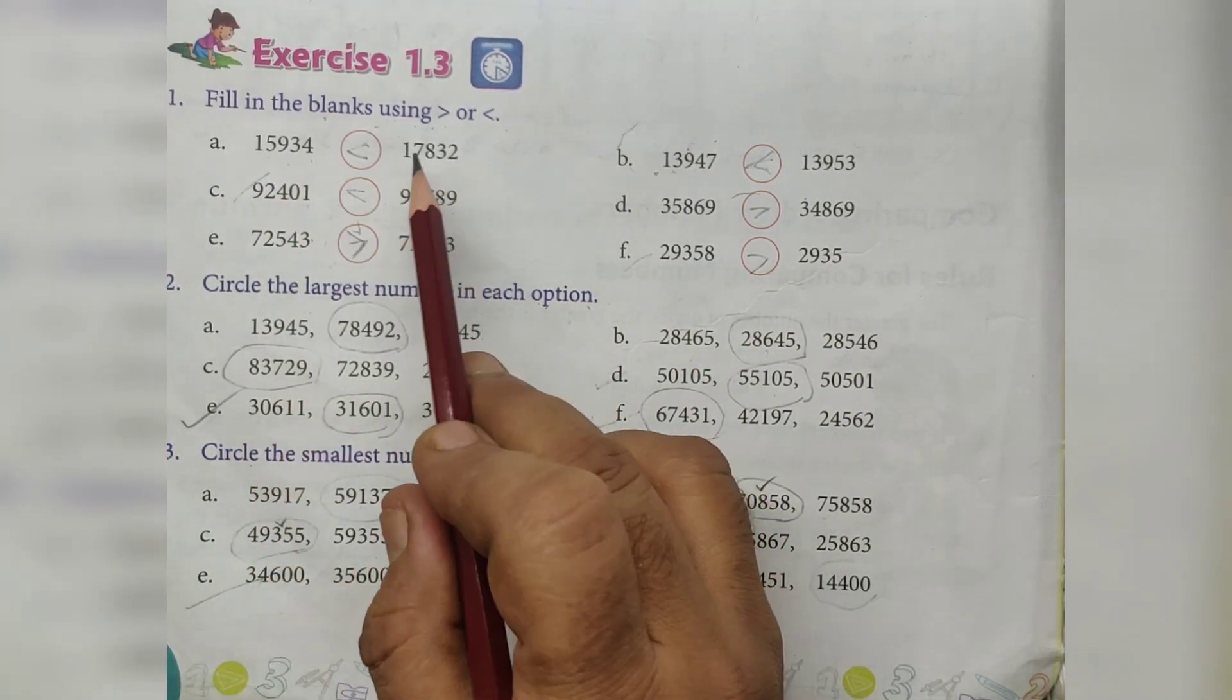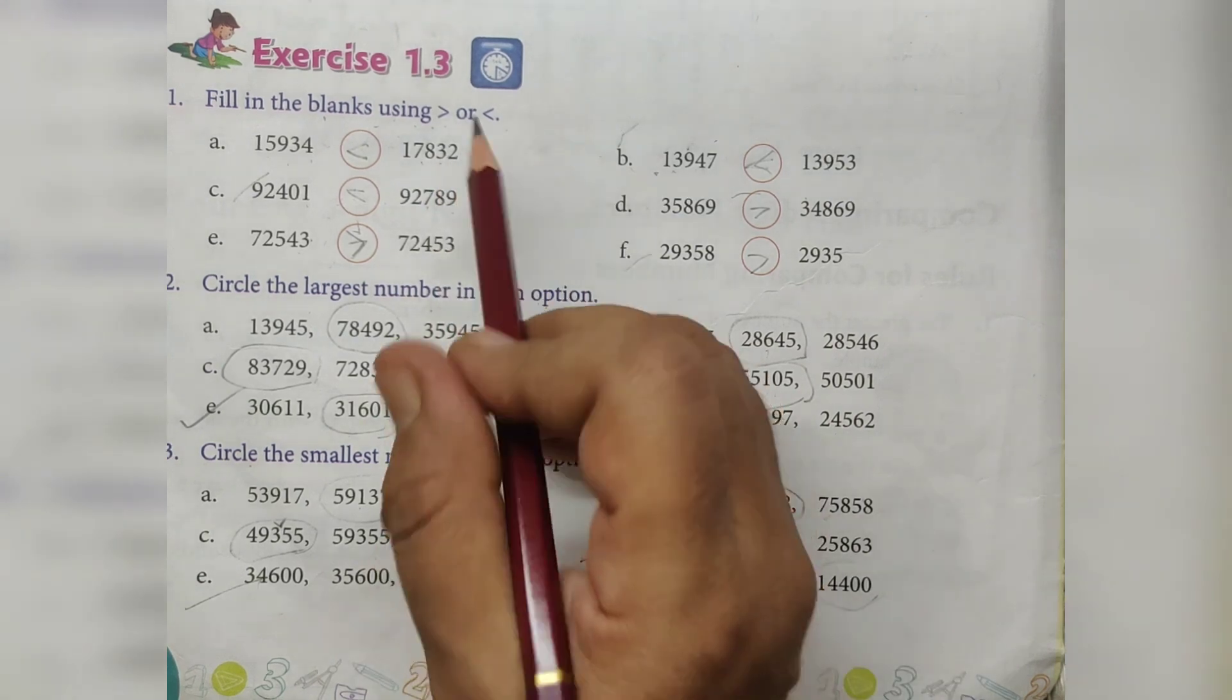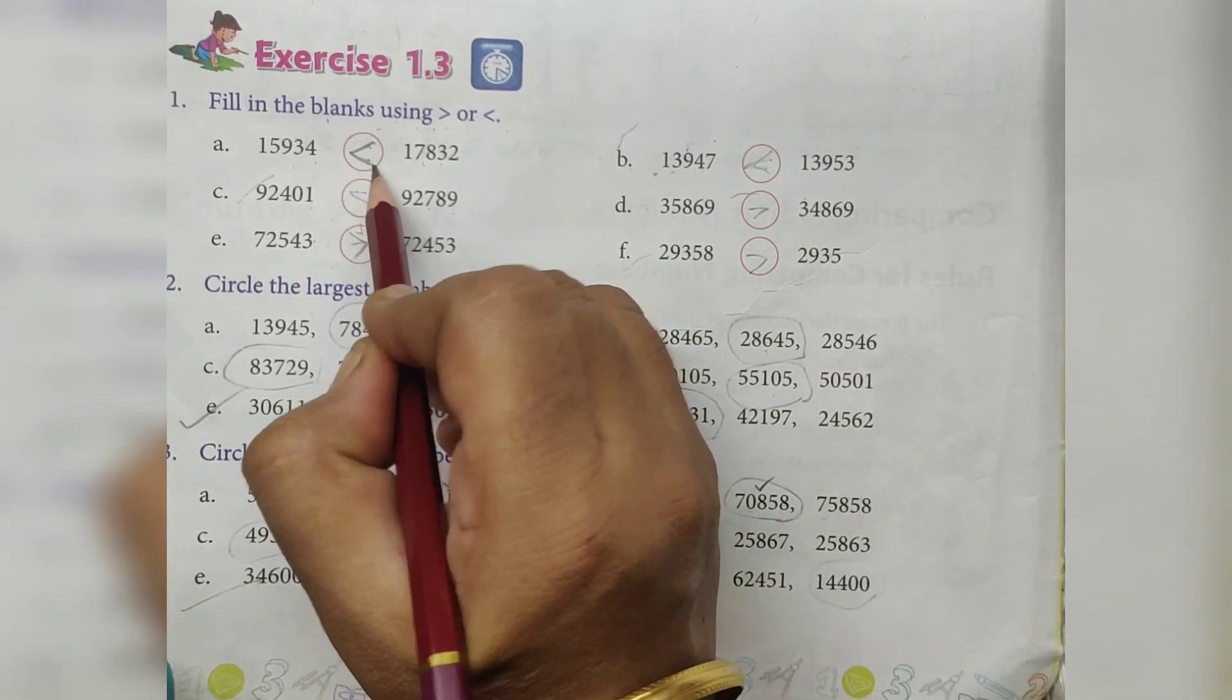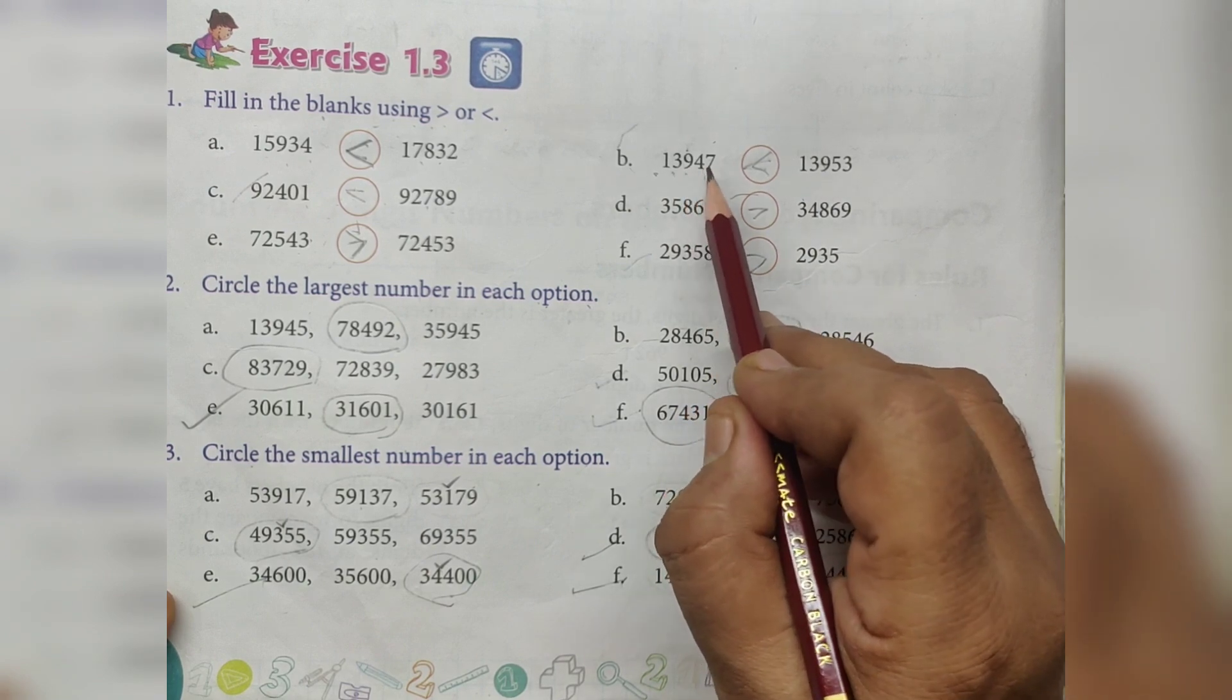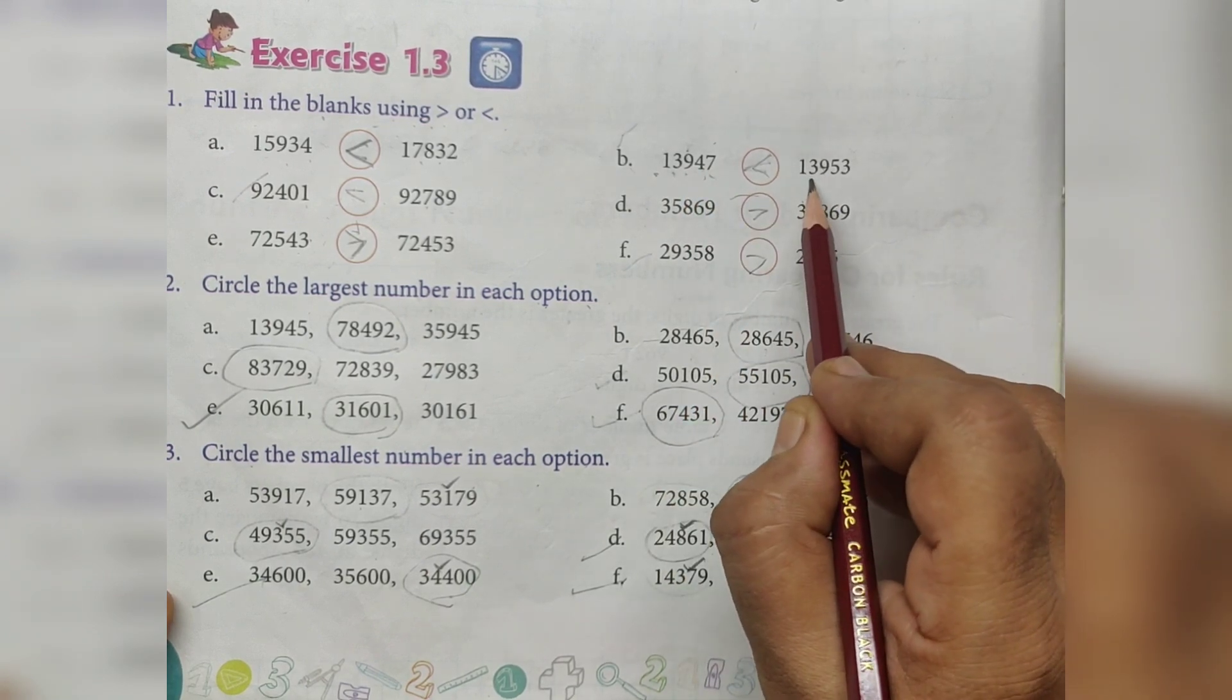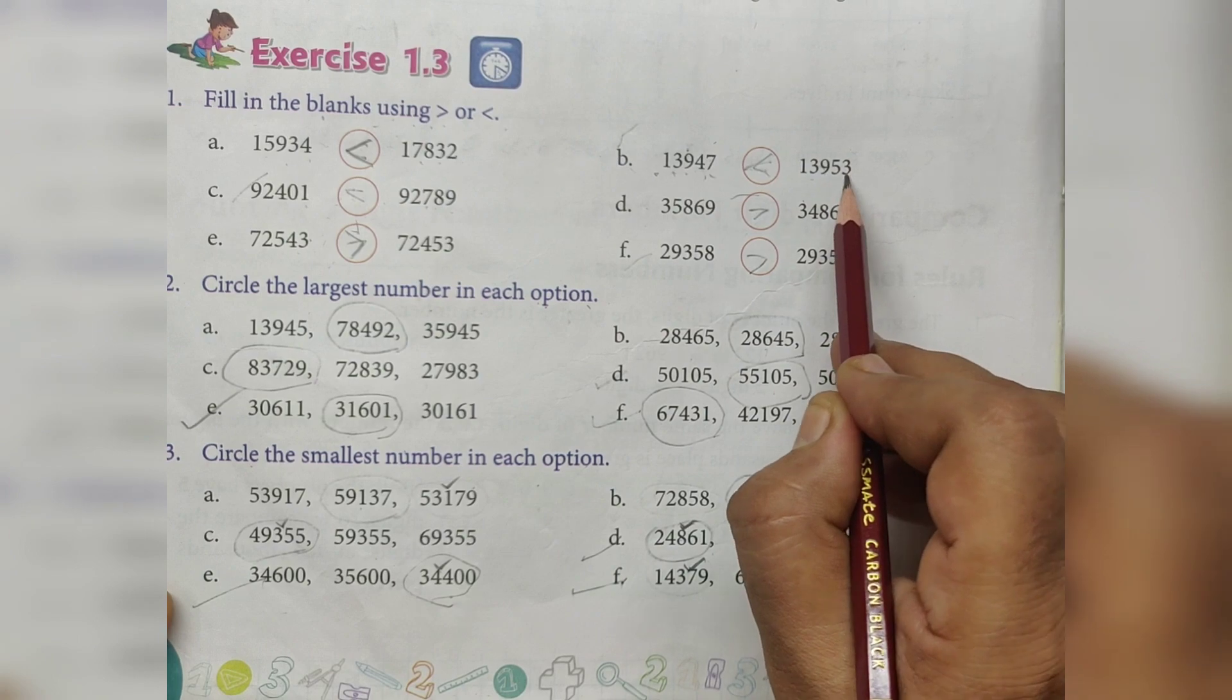15,934, 17,832, greater than. 13,947, 13,953, this is greater than.